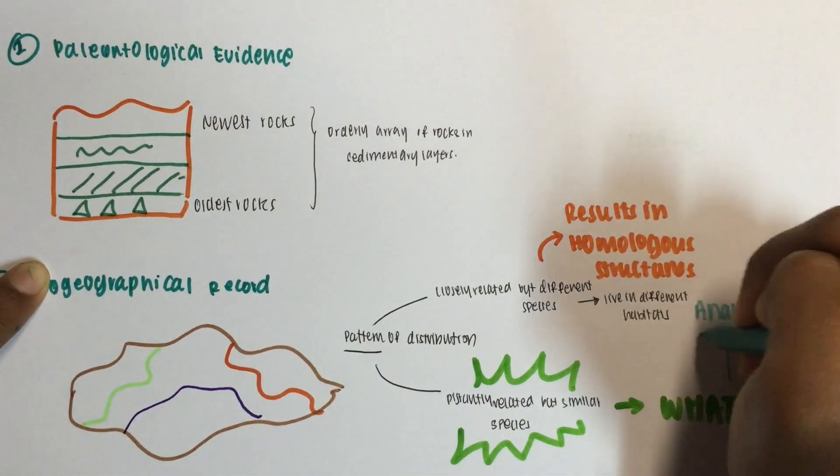Well, Darwin to the rescue again, because that's what we call analogous structures, or convergent evolution.